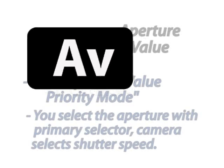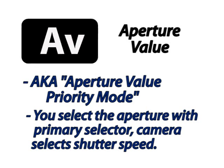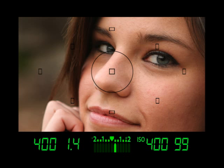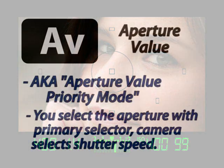AV mode stands for aperture value, or aperture priority. And in this mode, you're going to tell the camera what aperture you want it to shoot at, and it will make adjustments to the shutter speed depending on how much light is coming through the camera. I usually shoot on aperture value mode when I'm shooting weddings. If you're shooting a portrait and you want to blur the background out, you're going to probably want to put your aperture as wide as possible — like 2.8, 1.8, or 1.4. That's going to give you a very shallow depth of field, and the camera will be able to work out the shutter speed for you.